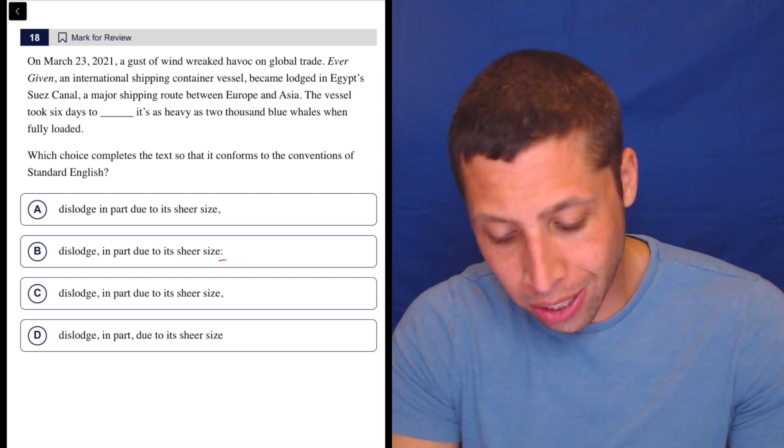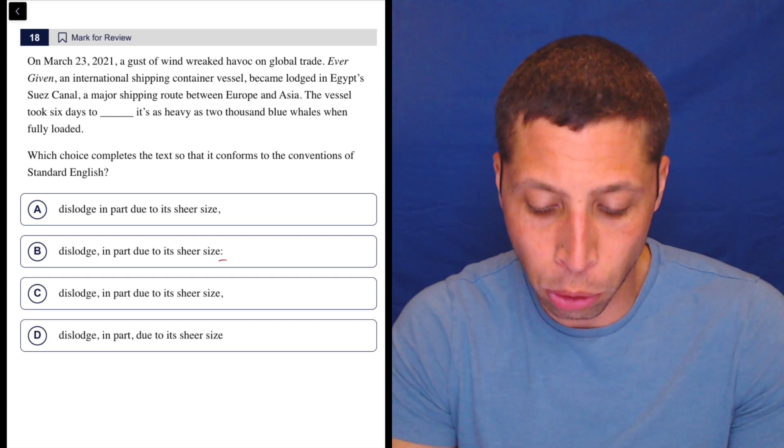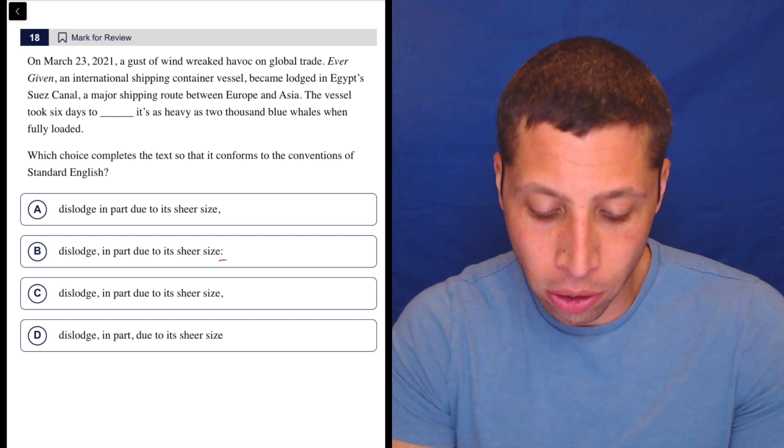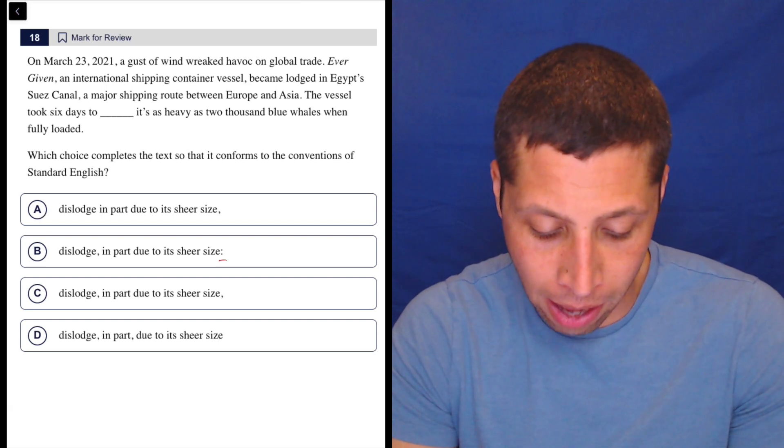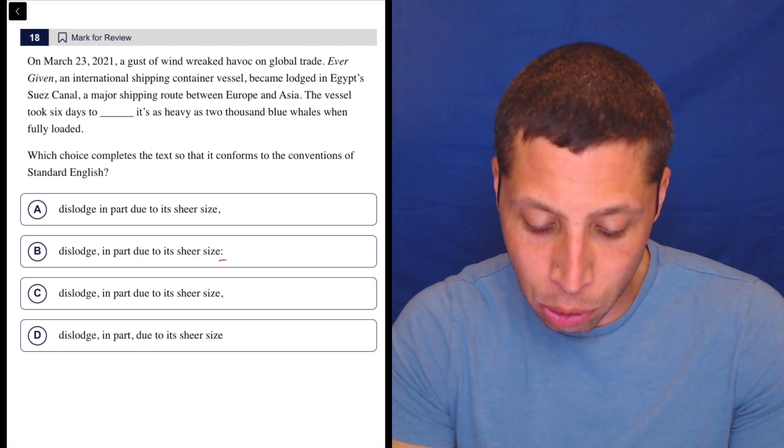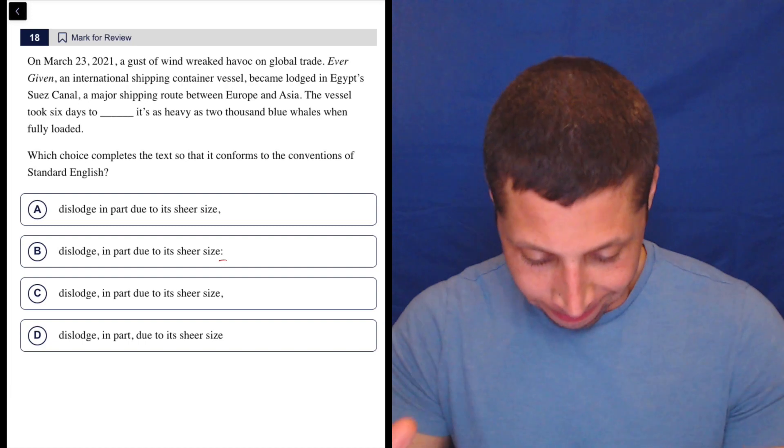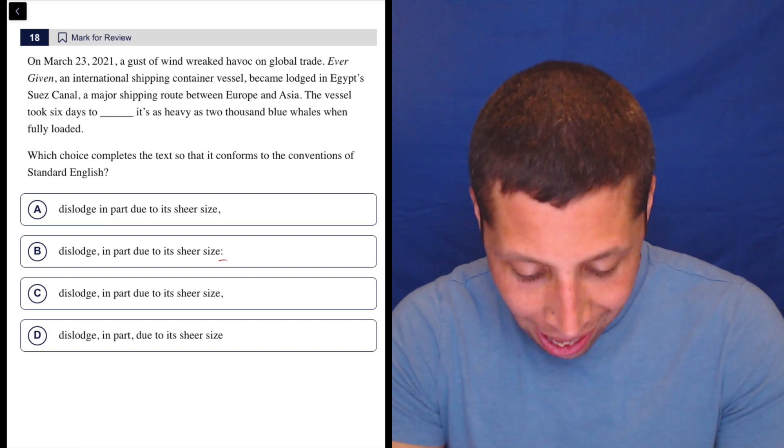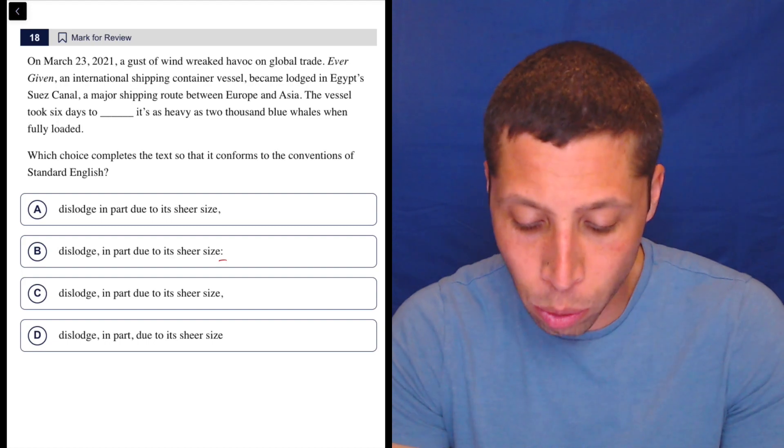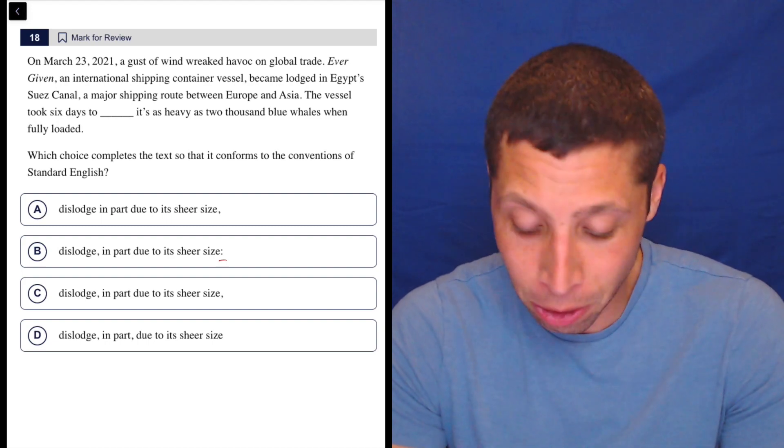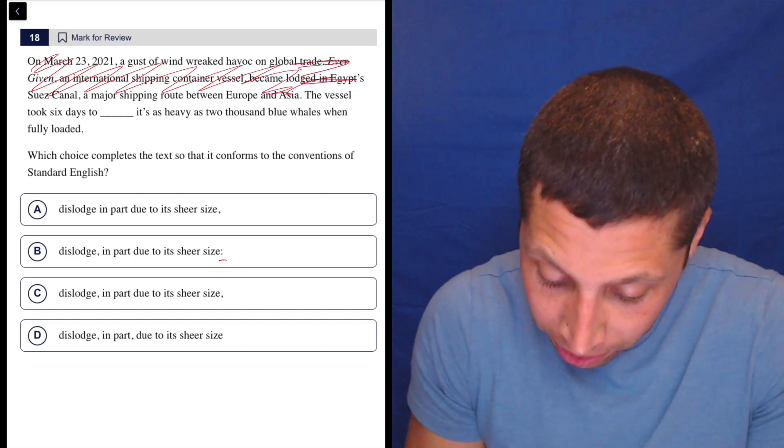So let's take a look. The first sentence doesn't matter. But on March 23rd, 2021, a gust of wind wreaked havoc on global trade. Ever Given, an international shipping container vessel became lodged in Egypt's Suez Canal, a major shipping route between Europe and Asia. See, this is why I got to read ahead, because I didn't need that, and I was reading it like it mattered. The vessel took six days to dislodge, in part due to its sheer size. It's as heavy as 2,000 blue whales when fully loaded. That's the only part that matters. So there we go. Get rid of all this. Don't care. Okay, start with the vessel.